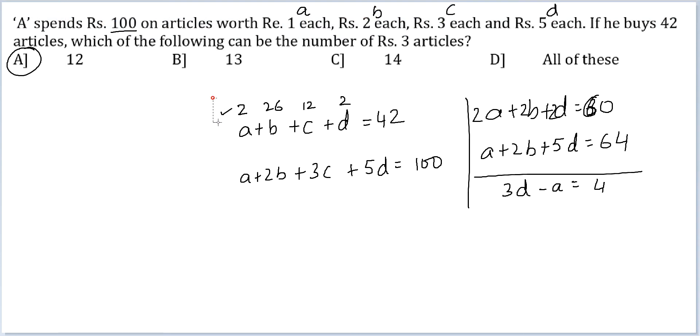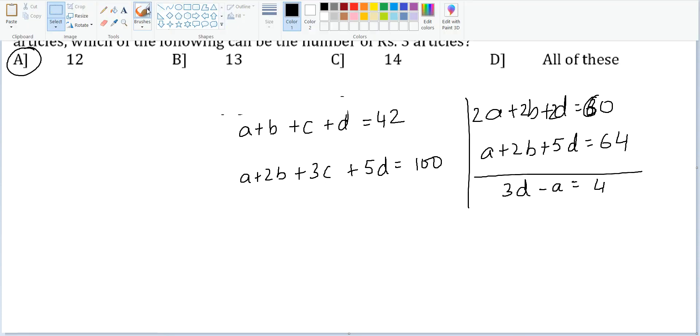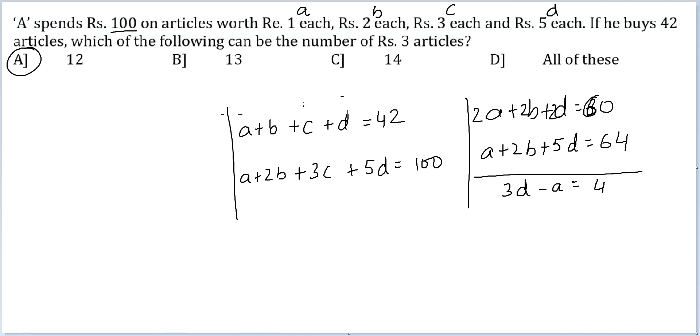Let us look at the second case. Here we are checking if C can be 13. If C is 13, I will get A plus B plus D is equal to 29. And A plus 2B plus 5D is equal to 61.